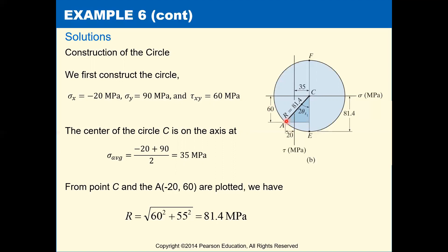All right, then to find our radius, we just need to do the square root of the sum of the squares. So 60 squared plus 55 squared square rooted gives us 81.4 megapascals. That's our radius.